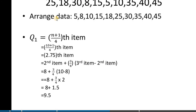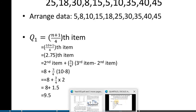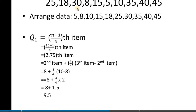Q1 equals the (n+1)/4 th item, where n is the number of items in this observation. In this question, we need to find out the quartiles for the data: 25, 18, 38, 15, 5, 10, 35, 40, 45. First, we need to arrange the data in ascending order.